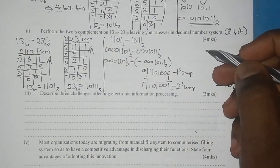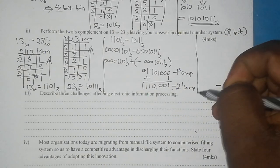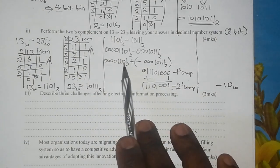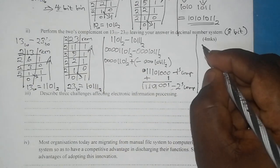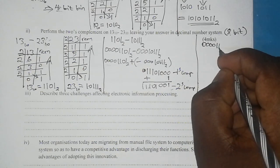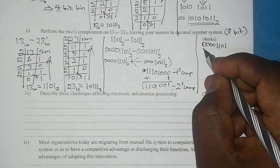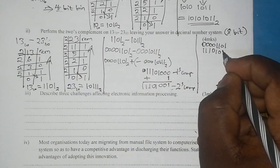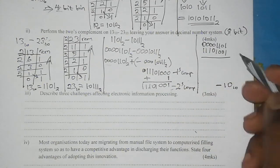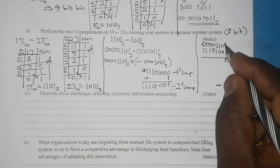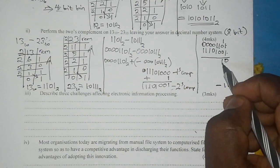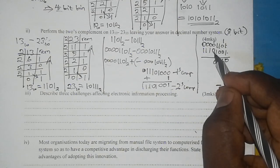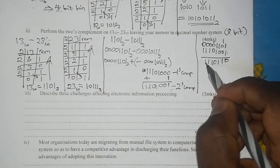Next, we take this 2's complement and add it to our positive number. So we have 00001101 and we are adding 11101001. Working through the addition: 1 plus 1 gives 0 carry 1; 1 plus 0 plus 0 is 1; 1 plus 0 is 1; 1 plus 1 is 0 carry 1; then 1 plus 0 is 1; and the remaining bits give 1, 1, 1.